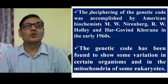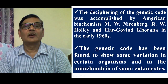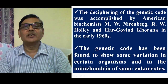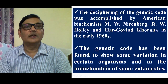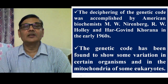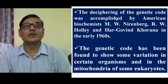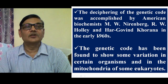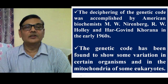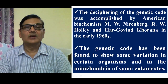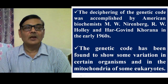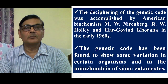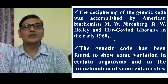The genetic code was deciphered by a number of American biologists, particularly biochemists — M.W. Nirenberg, R.W. Holley, and Har Gobind Khorana. These were the scientists who discovered the genetic code, accomplished in the early 1960s. The genetic code has been found to show some variation in certain organisms, particularly in the mitochondria of some eukaryotes, which are the exceptions I mentioned.